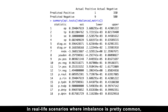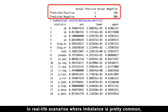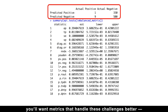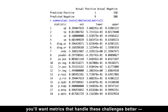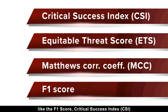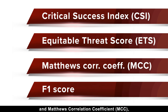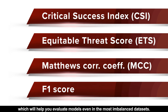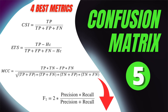In real-life scenarios where imbalance is pretty common, you'll want metrics that handle these challenges better, like the F1 score, critical success index, and Matthew's correlation coefficient, which help evaluate models even in the most imbalanced datasets. To learn all about them, just watch this video next.